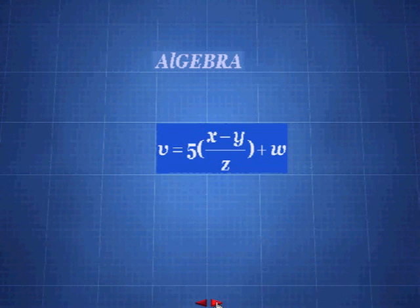Okay, here we have a problem. v equals 5, open parenthesis, x minus y divided by z, close parenthesis, plus w. Okay, first we need to do the operations in parenthesis.